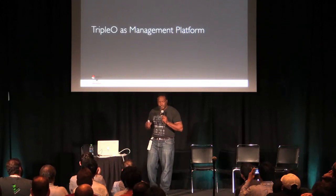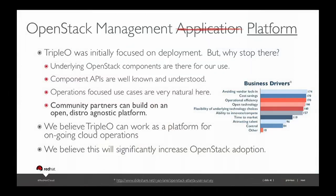Now let's talk about Triple O as management. Instead of an OpenStack management application, I want to change this to a platform. Triple O was introduced by HP; Red Hat added the Tuscar part. It was focused on deployment, but why stop there? Inside that box is OpenStack, so we already have components to use — the APIs are well known, we're talking to Heat, Nova, Glance, Neutron — just focused on a different area. The operations focus is very strong, and the community can look at this as an open platform that's distro agnostic and can be extended as you see fit.